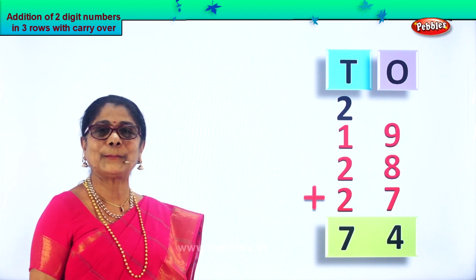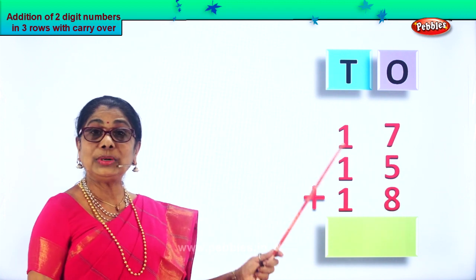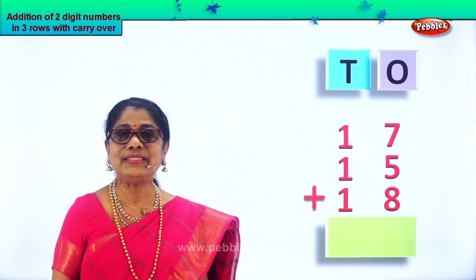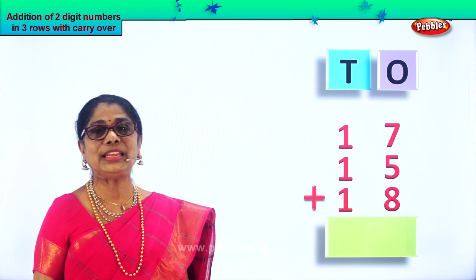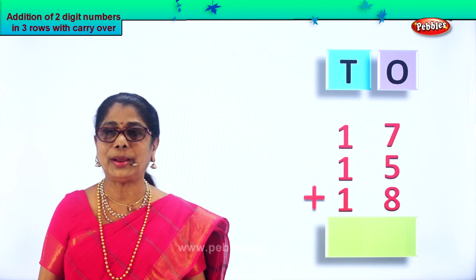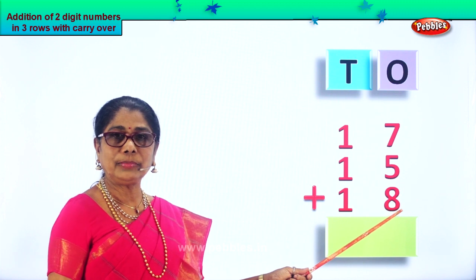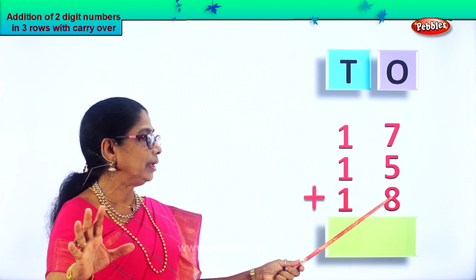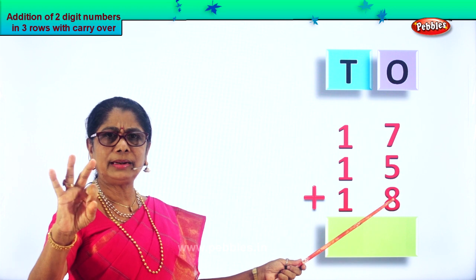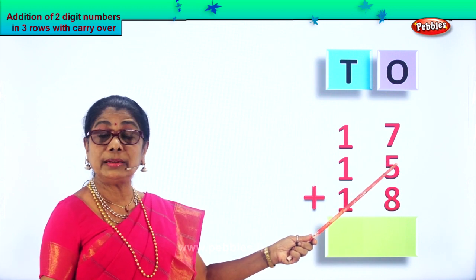Let's take another sum. What is seventeen plus fifteen plus eighteen? Seventeen plus fifteen plus eighteen — let's count all the ones: seven plus five plus eight. Eight in the mind, five in the fingers. After eight: nine, ten, eleven, twelve, thirteen. Thirteen plus seven.